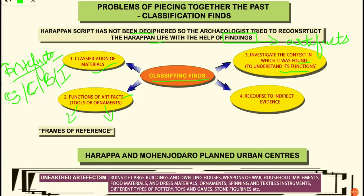Fourth, sometimes archaeologists depend on indirect evidence. For example, there are no traces of cotton at some Harappan sites. So to know about the fabrics of Harappan clothing, archaeologists depend on indirect evidence such as figures engraved on sculptures. They study these figures to understand what kind of fabrics was used. Moreover, archaeologists have to develop frames of reference and compare Harappan artifacts with those of other civilizations. For example, the first Harappan seal could not be understood until archaeologists compared it with seals found at Mesopotamia.